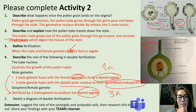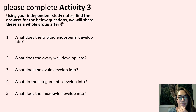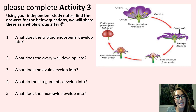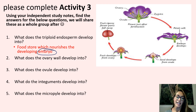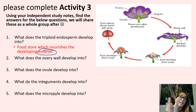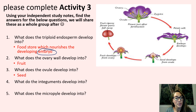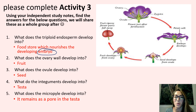Please pause the video and complete activity 3. After fertilization, the triploid endosperm develops into food storage for the seed, providing nourishment to the growing embryo so it can develop a plumule and access energy from the sun. The ovary wall develops into the fruit, the ovule into the seed, the integuments into the testa, and the micropyle remains as a pore in the testa.